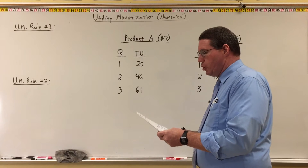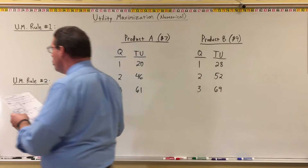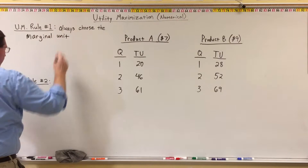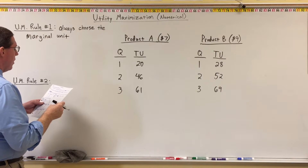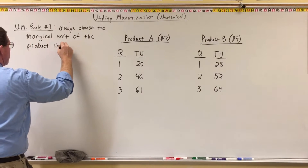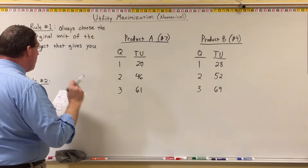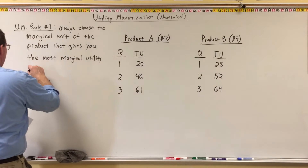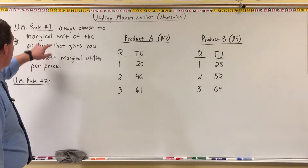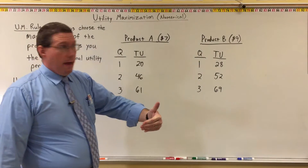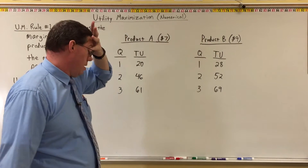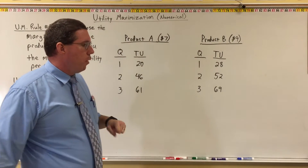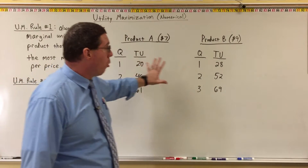Utility maximization rule number one is: always choose the marginal unit of the product that gives you the most marginal utility per price. The marginal unit is the next unit. We're going to do an example here — we've got two products. Let's say that you are at a party and you are trying to decide whether you are going to have chips or pizza.